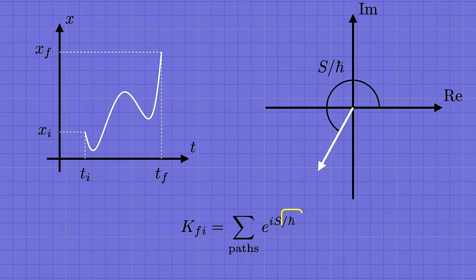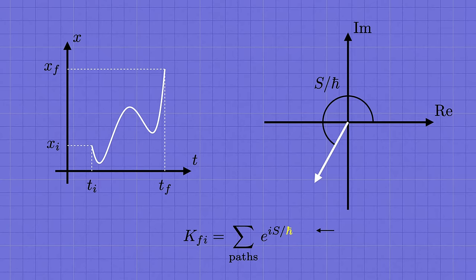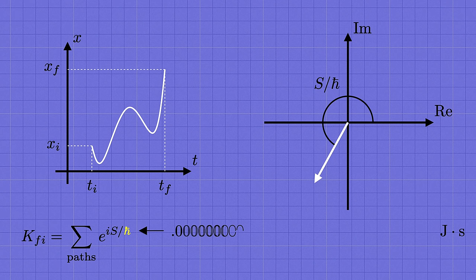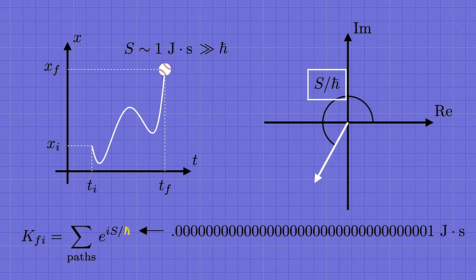So we pick any trajectory connecting the initial point to the final point. We compute the action s for that path, divide by h bar, and then we draw the corresponding arrow at that angle. If we pick a different trajectory, we'll get some other value for the action, and that'll give us another arrow at some other angle. And what we need to do is add all these arrows up. Here's the thing though, h bar is really, really, really tiny. Again, in SI units, its value is of order 10 to the minus 34. That's a one with 33 zeros to the left of it, and then the decimal point. By comparison, a typical action for a baseball will be something like one joule second. Maybe give or take a few orders of magnitude in either direction, but it's vastly larger than the value of h bar.